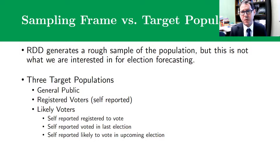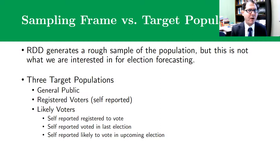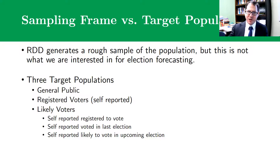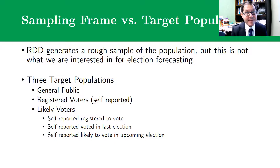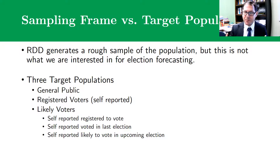There's a third population we're often trying to draw inferences about: likely voters — or more precisely, who is actually going to show up on election day and cast a ballot. We're trying to predict a target population that literally doesn't exist yet, projecting from the present to what that future population might be. That future population can be nudged by all sorts of things — whether it rains on election day can depress turnout and move someone who would have been a voter out of that target population. This makes it a really difficult thing to predict, above and beyond the general challenge of random sampling.